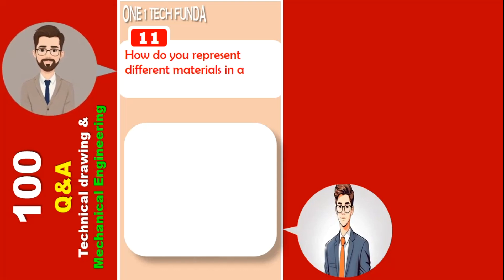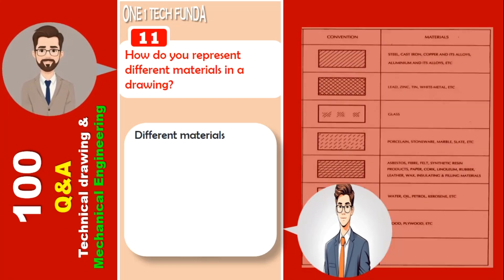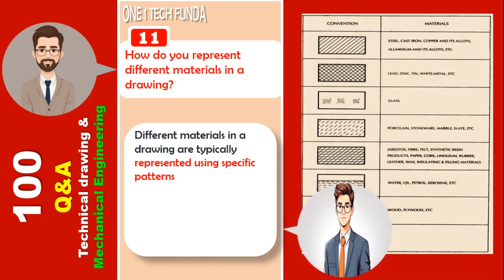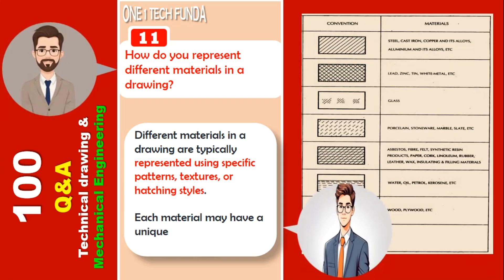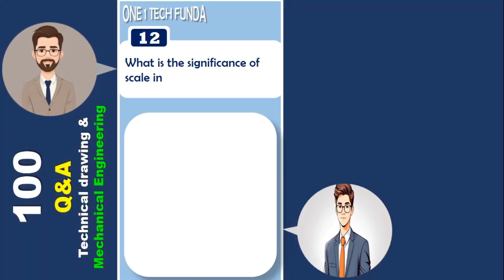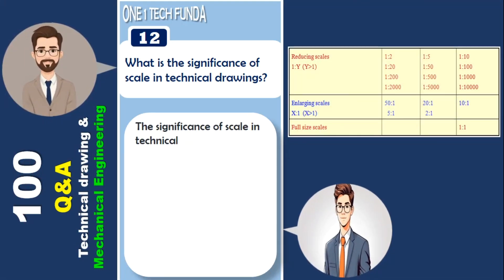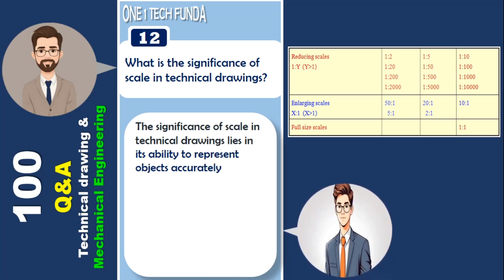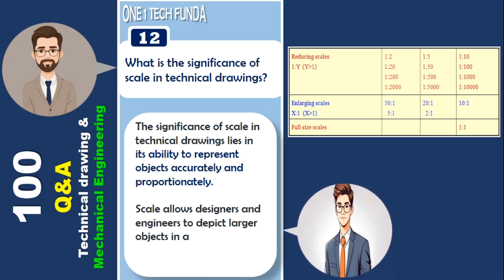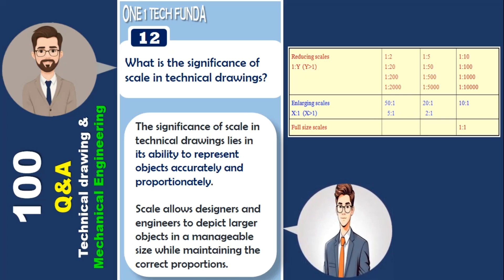How do you represent different materials in a drawing? Different materials in a drawing are typically represented using specific patterns, textures, or hatching styles. Each material may have a unique fill pattern to indicate its type. The significance of scale in technical drawings lies in its ability to represent objects accurately and proportionately, allowing designers and engineers to depict larger objects in a manageable size while maintaining correct proportions.